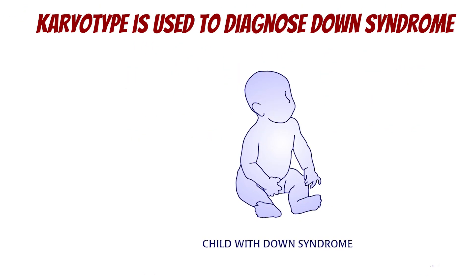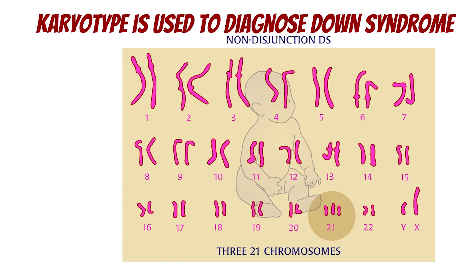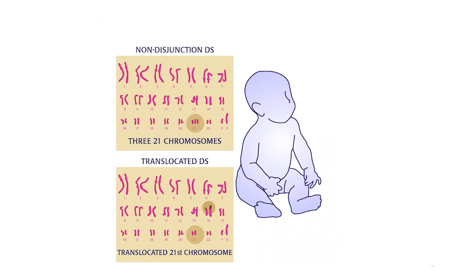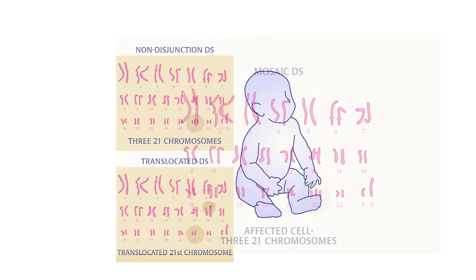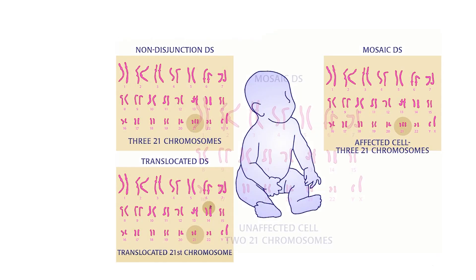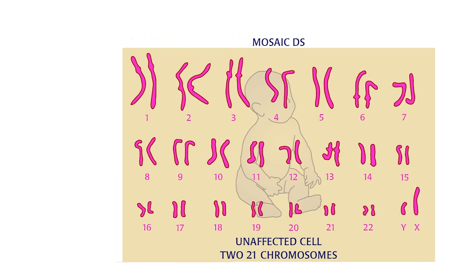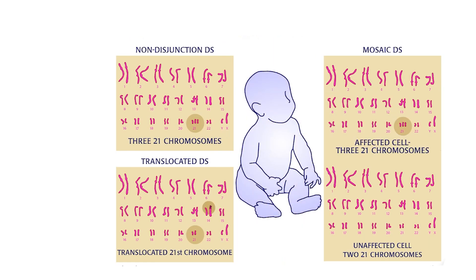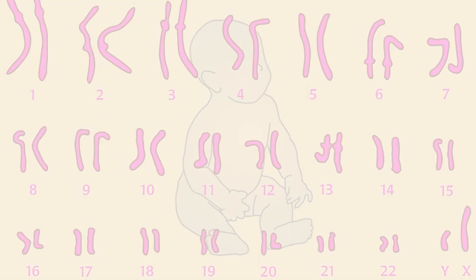A child with Down syndrome will have a karyotype with either 3 chromosome 21s or a translocated 21. If the child has Mosaic Down syndrome, some cells will have a normal 46 chromosomes, while others will have 47 with 3 copies of chromosome 21.